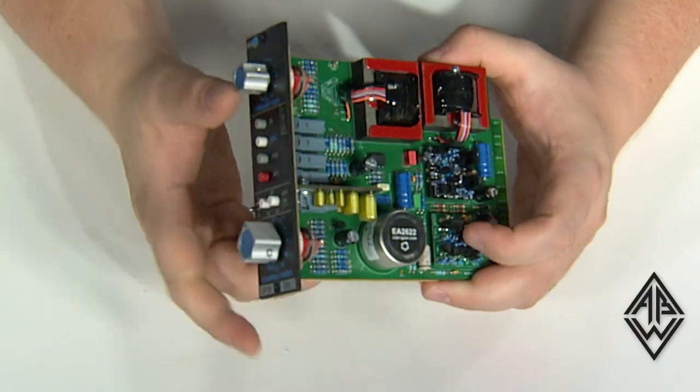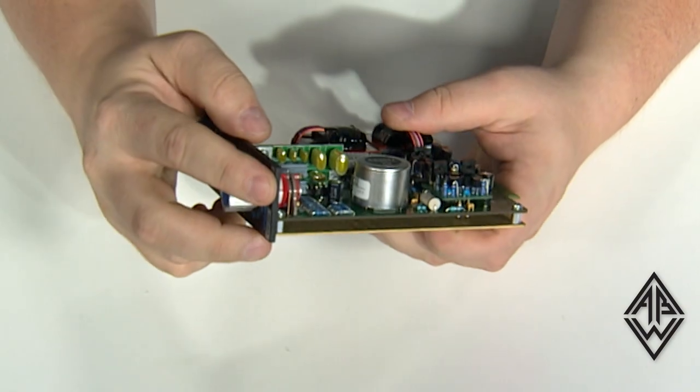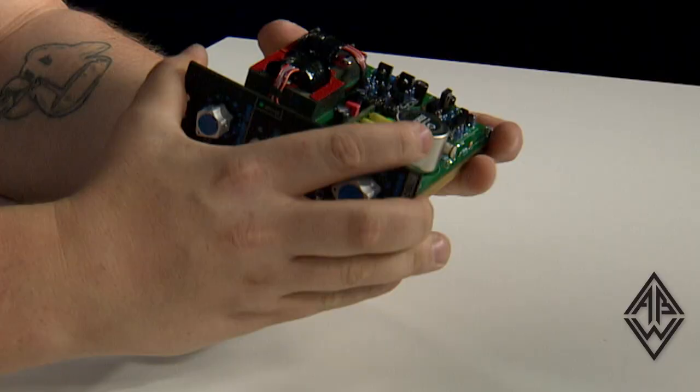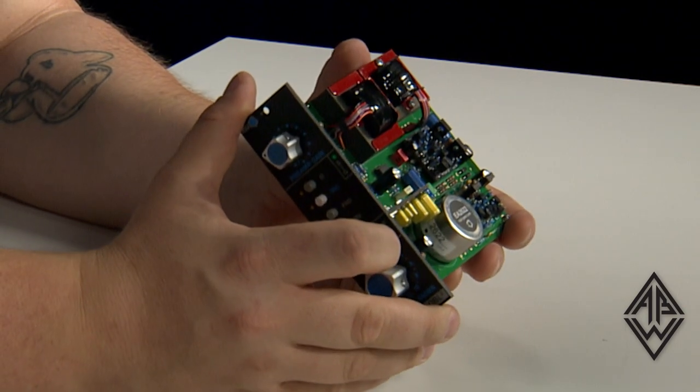This is an extremely well-made piece of gear. We have an L-bracket chassis that's attached to the face plate, which makes it feel extremely sturdy, especially when you're inserting it into a 500 series rack.